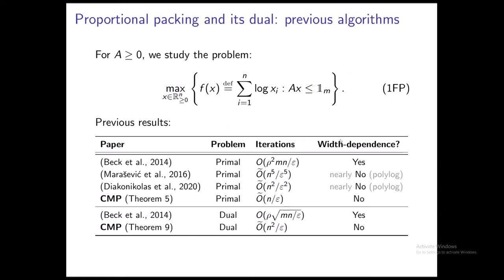Let's talk about previous results for the one-fair packing problem. Our result is the fastest so far; the previous fastest was for the general alpha case. We can exploit the special geometry that alpha equal one has. Notably, ours is also the first result that is truly width-independent, where the width is the maximum of A_ij divided by the minimum of A_ij. So our algorithm is not only the fastest but the only one that is width-independent. We have both a primal algorithm and a dual algorithm.